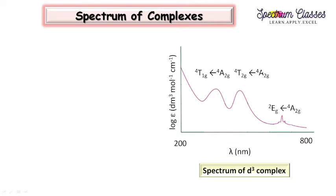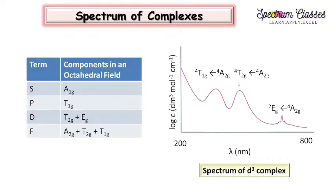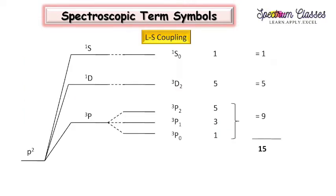The next question is: what kind of term symbols are we getting? We are getting this type of term symbols - S, P, D and F. Once we know the term symbol, we can predict the set of orbitals for that particular term and we can predict the spectrum. That is why it is very important to know the term symbol. So let's start with the video and I am going to discuss all the steps one by one.